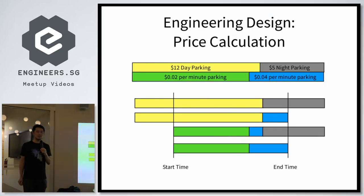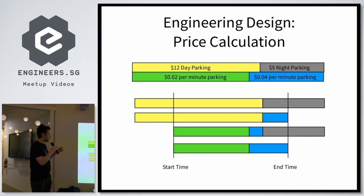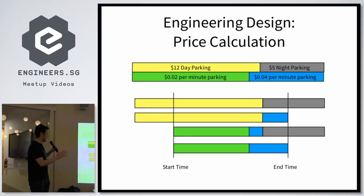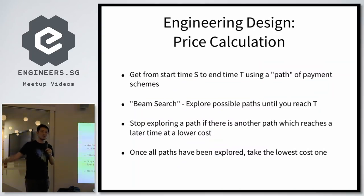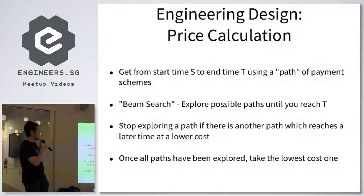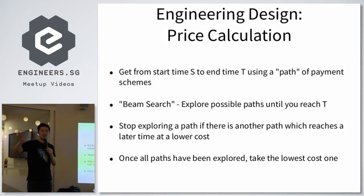Similarly, price calculation for parking turns out to be non-trivial because there are per-minute prices but also block prices. You need to figure out what combination of prices gives you the cheapest way of getting from time A to time B. For those of you who studied algorithms, we use basically what's called a beam search algorithm, where we treat it as getting from time A to time T at the lowest cost possible and we prune paths which don't have very much promise.